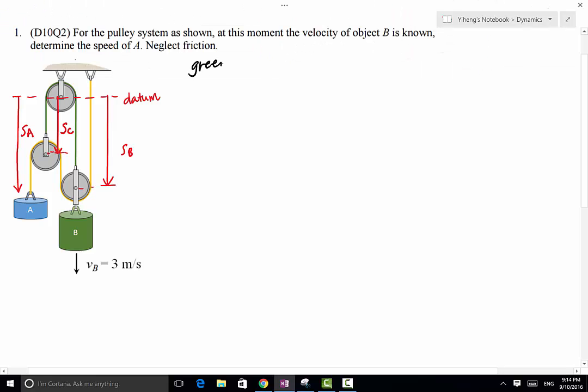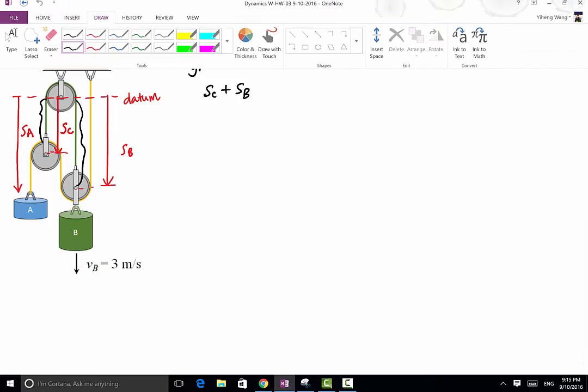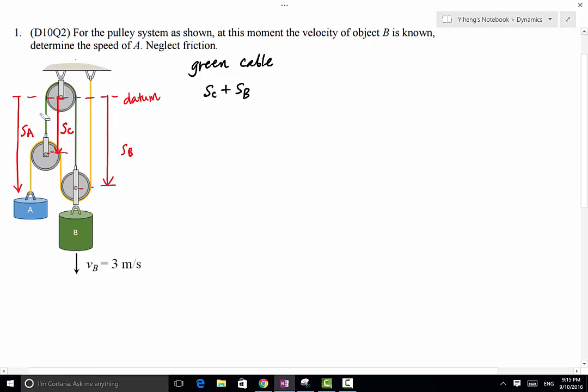If we count for the total length of the green cable, we realize that the green cable's length equals to SC plus SB. So SC is this part right here. SC plus SB plus some kind of fixed length equals to a constant. So SC and SB equals to a constant length L1. L1 doesn't equal to the total length of the green cable. However, L1 plus some constant length equals to the total length of the green cable. So this is a constant.